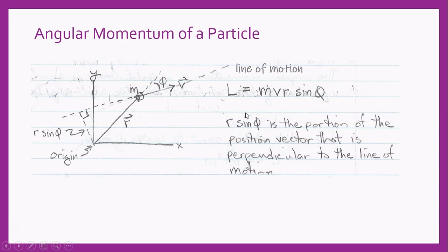Let's take a closer look at the angular momentum of a particle. We have our particle of mass m traveling in this direction with velocity v. That scalar product gives you the momentum vector, and here's our position vector. So the angular momentum is equal to m v r sine phi.